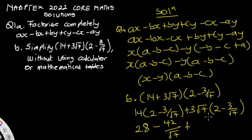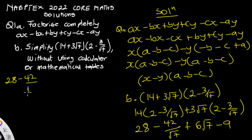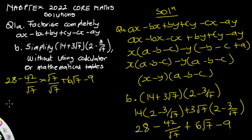Continuing the expansion: 3√7 times 2 gives 6√7, and 3√7 times 3/√7 gives 9, since √7 cancels with √7. So we have 28 minus 42/√7 plus 6√7 minus 9. To rationalize the denominator, we multiply 42/√7 by √7/√7, giving 42√7/7, which simplifies to 6√7.